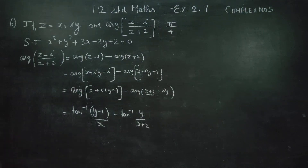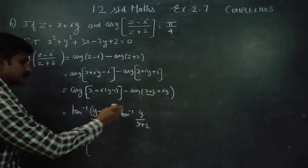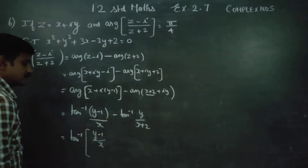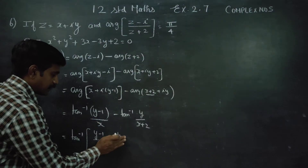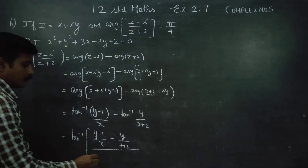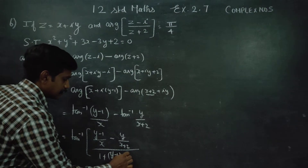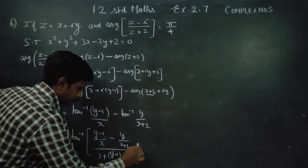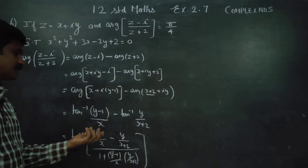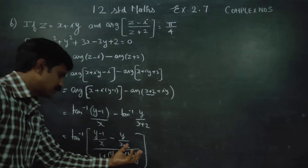Now we apply the tan inverse subtraction formula: tan inverse of a minus tan inverse of b equals tan inverse of (a minus b) divided by (1 plus a times b). Here a is (y minus 1)/x and b is y/(x plus 2), so we get tan inverse of [(y minus 1)/x minus y/(x plus 2)] divided by [1 plus (y minus 1)/x times y/(x plus 2)].